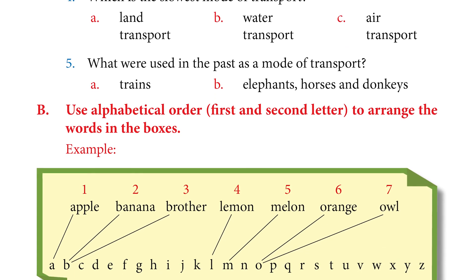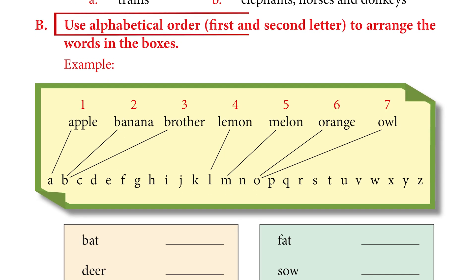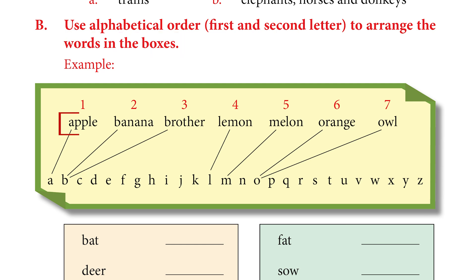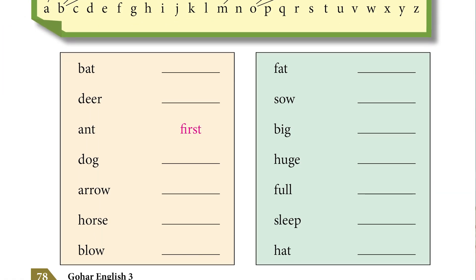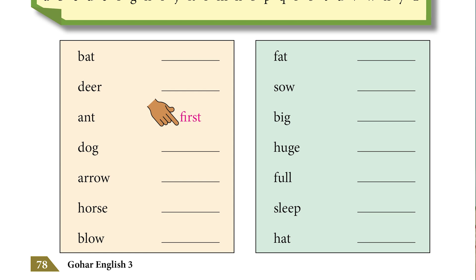After that, the next question is on page 78: use alphabetical order by first and second letter to arrange the words in the boxes. For example, in the word 'apple', the first letter is A. Both 'banana' and 'brother' start with B, but because 'banana' has A after B and 'brother' has R after B, 'banana' comes first. When two words share the same initial letter, we look at the second letter to arrange them. So the final order will be: bath, big, blue, fat, full, hat, horse, huge.